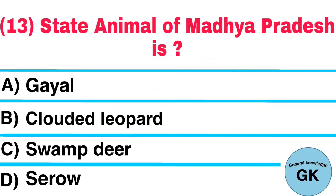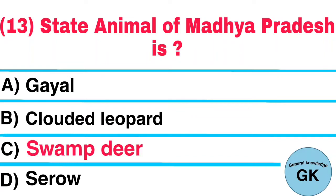Question Number 13. State Animal of Madhya Pradesh is: A. Guile, B. Clouded Leopard, C. Swamp Deer, D. Cero. Answer: Swamp Deer.